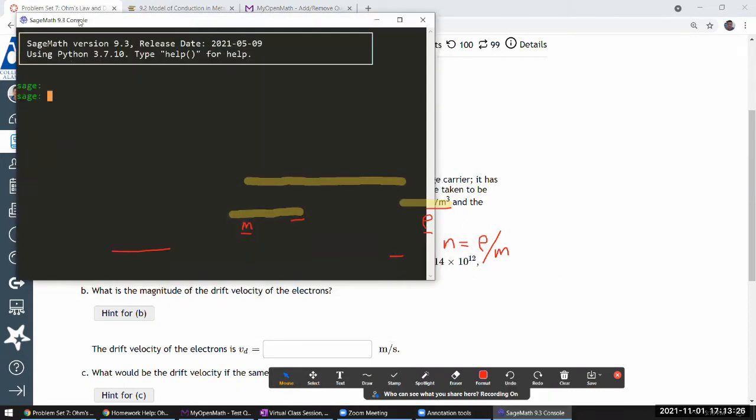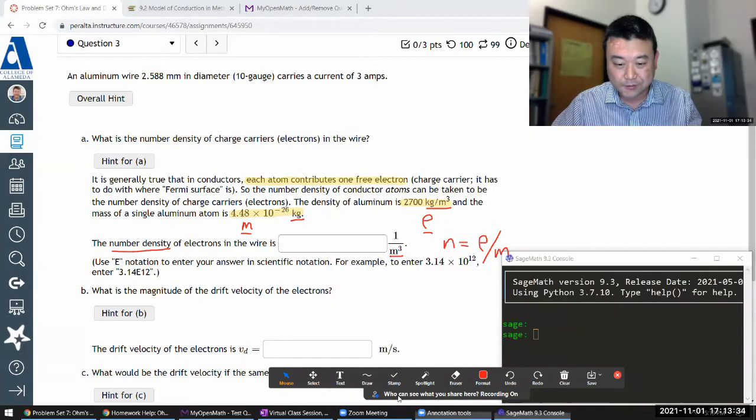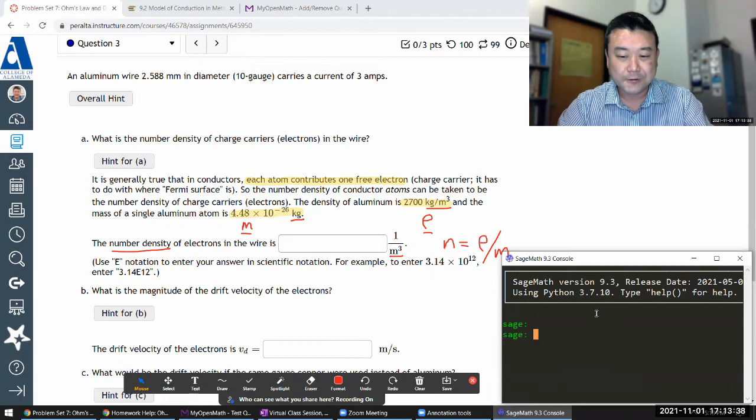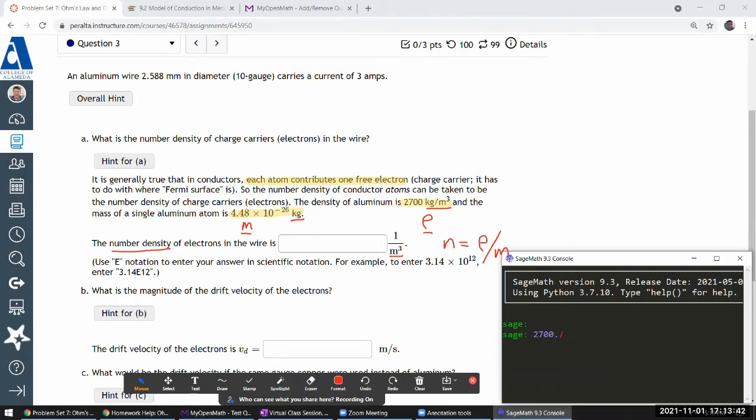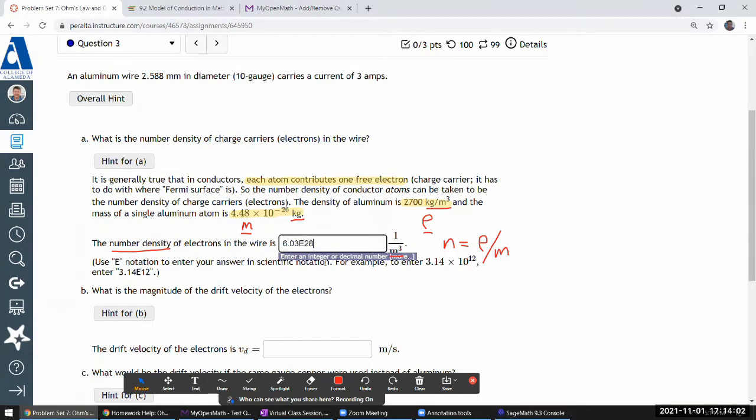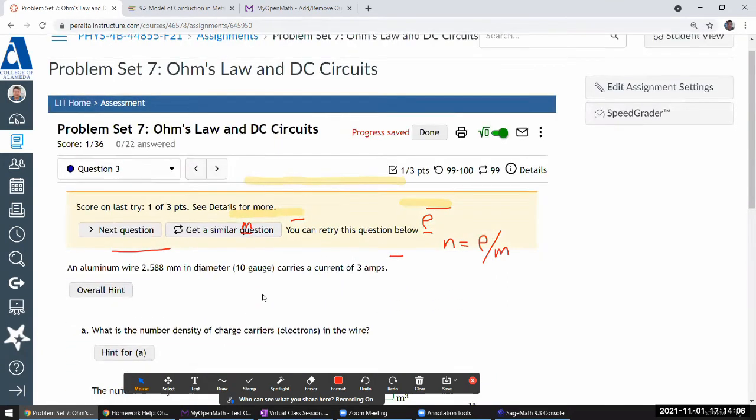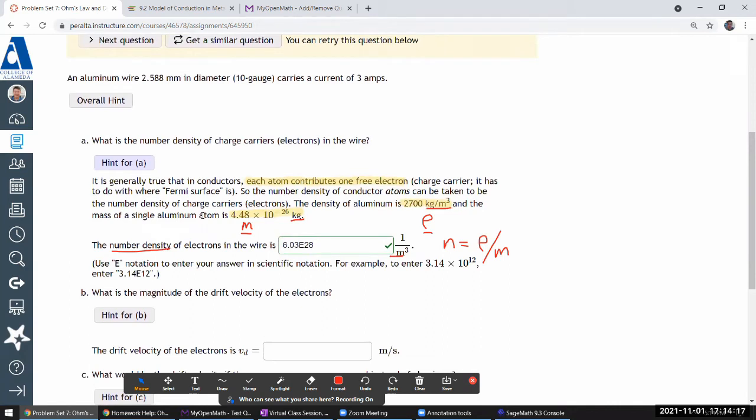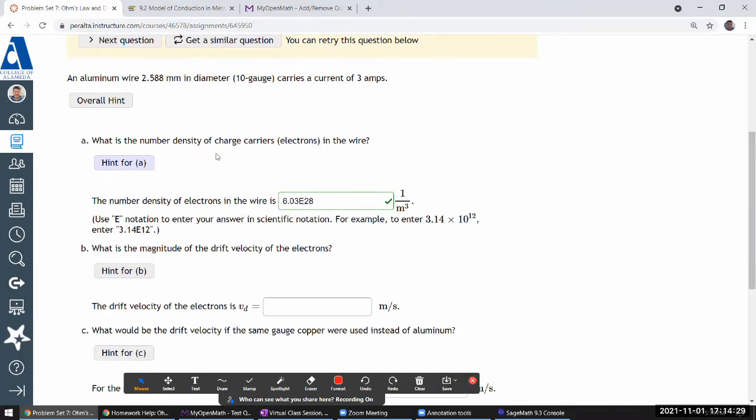I have SageMath out in case I needed to do any computer algebra stuff. So let me use this as my calculator. The number is 2,700 divided by 4.48E-26. The number density of electrons is 6.03 times 10 to the 28. Let me submit and see. Good. So that's the number density.